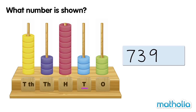In the tens place, there are three beads. And in the ones place, there are also three beads. The number shown in the place value abacus is 73,933.